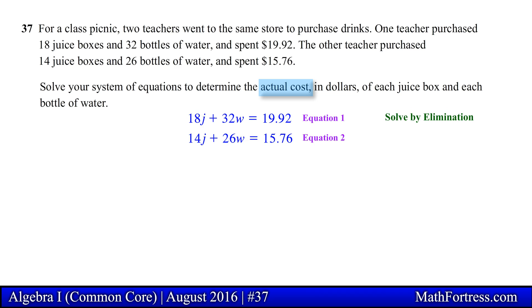For this method we first need to choose a variable to eliminate. Usually the variable that has the smallest coefficient is the best variable to eliminate. In this case let's eliminate the variable j.